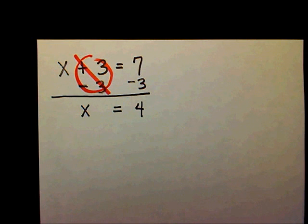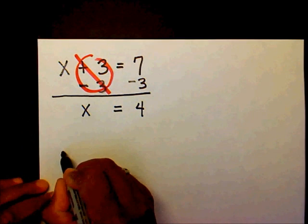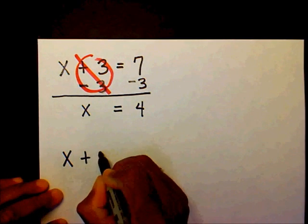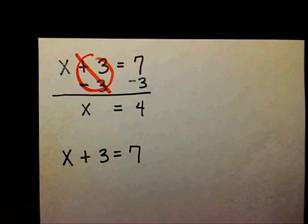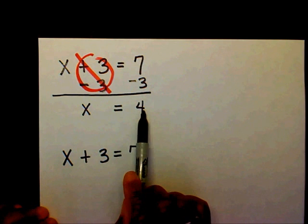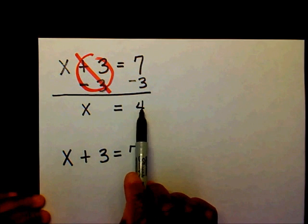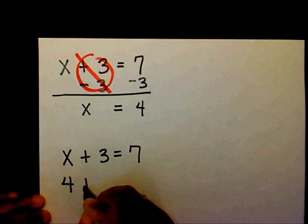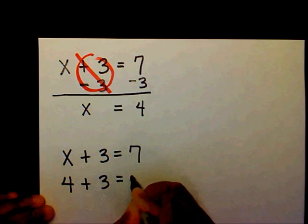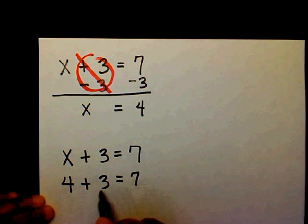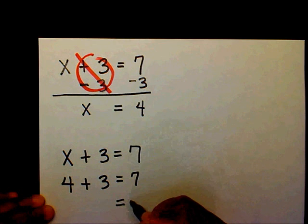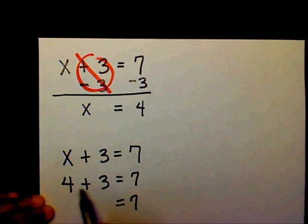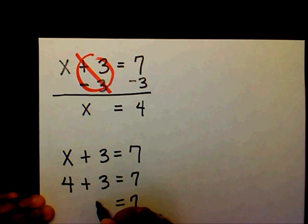Most teachers want you to check your solution. Write the original down again: x plus 3 equals 7. I think that x equals 4, so I'm going to substitute this 4 in for my x. Both sides should be equal. 4 plus 3 is 7. 7 equals 7.